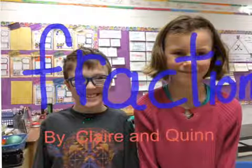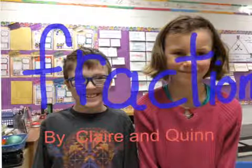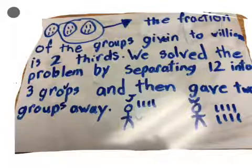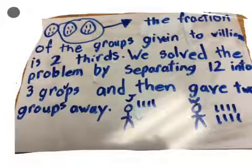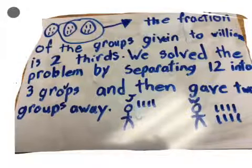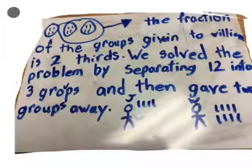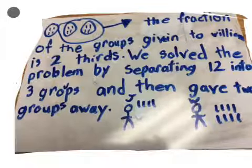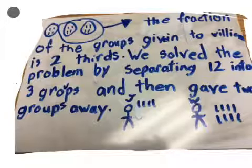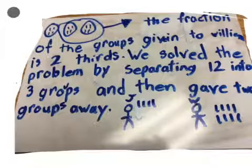Fractions by Claire and Quinn. Jonah has 12 Pokemon cards. He puts them into three equal groups. He gives two of the groups to William. What fraction of the groups did he give to William?